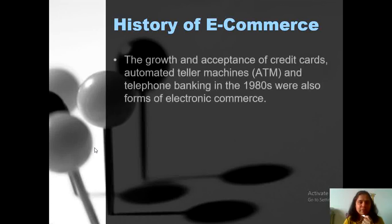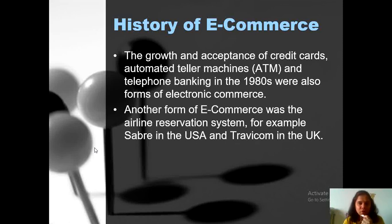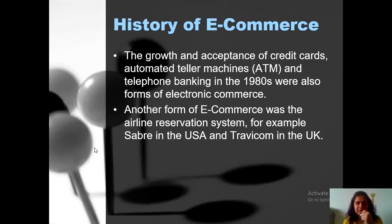Next is the history of e-commerce. In the history, there was growth and acceptance of systems like credit cards, Automatic Teller Machines (ATMs), and telephone banking in the 1980s. These were also considered early types of electronic commerce. In 1980 there was no internet. These forms of electronic commerce were implemented for airline reservation systems in the USA and the UK — companies like Sabre in the USA and Travicom in the UK.